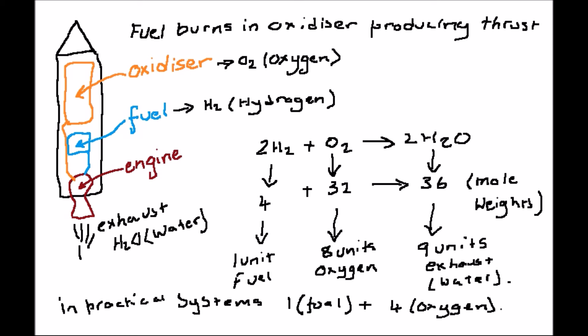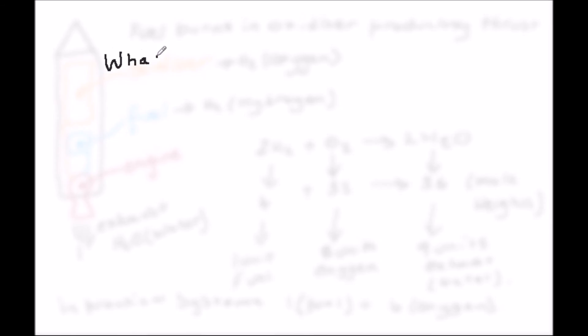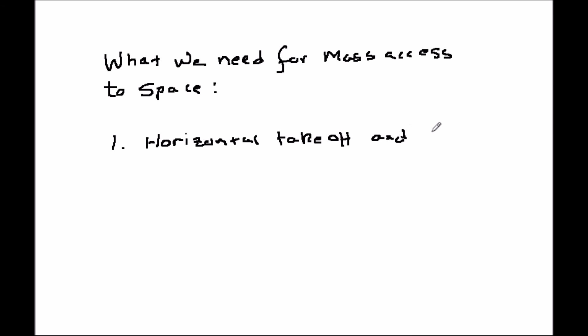So with what we said earlier, here we have two requirements for a viable and practical mass access system for space. Firstly, a space plane which can take off horizontally and land horizontally. And secondly, an air-breathing engine.